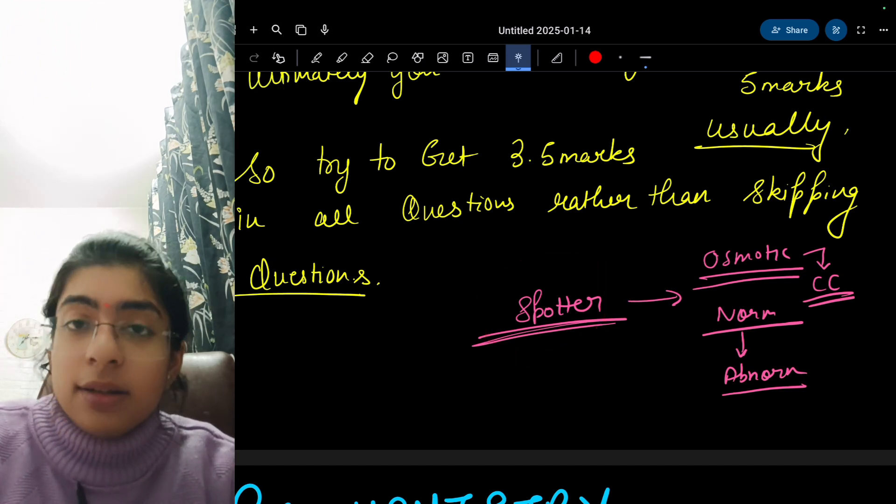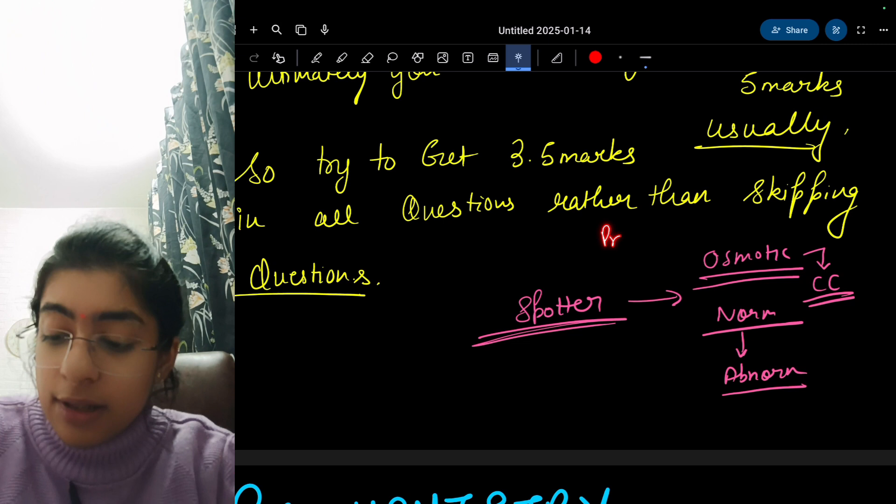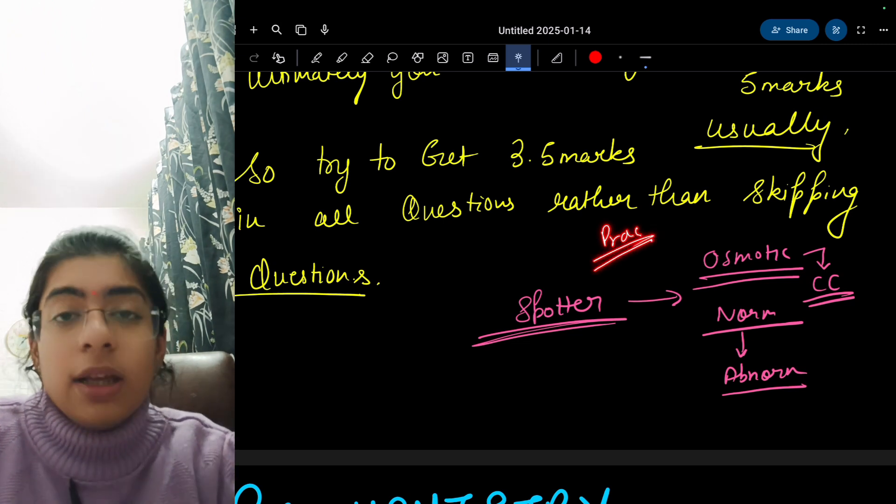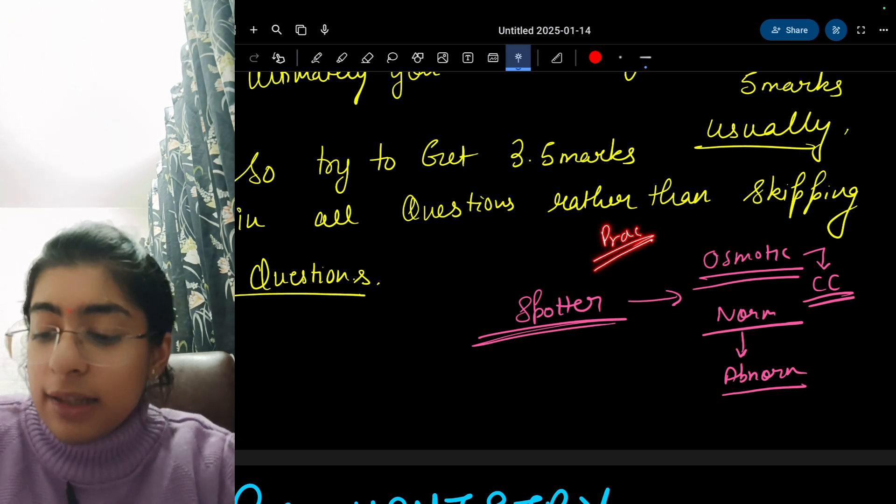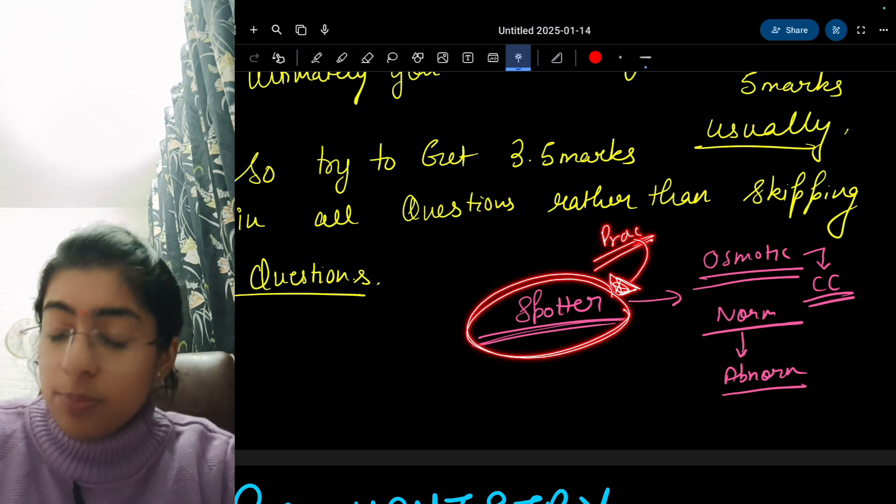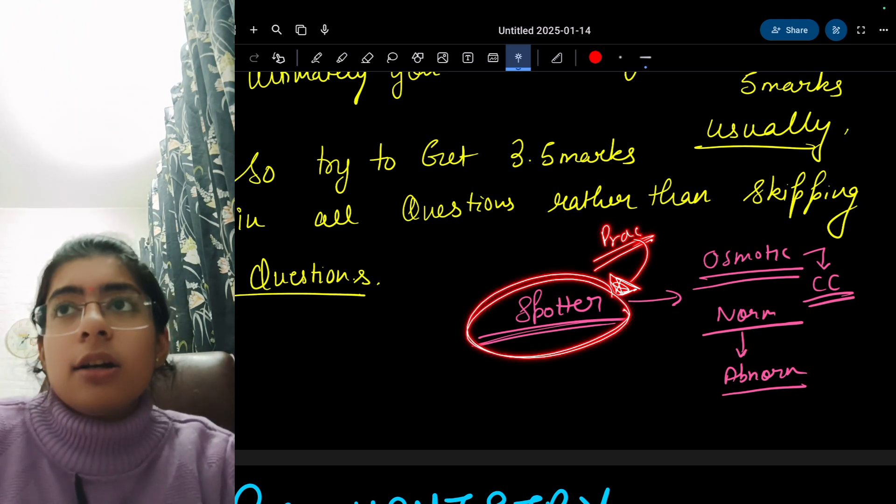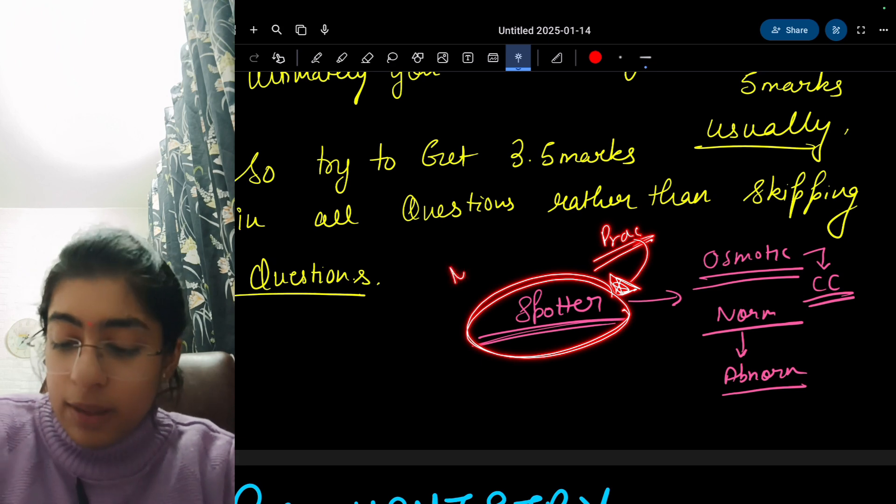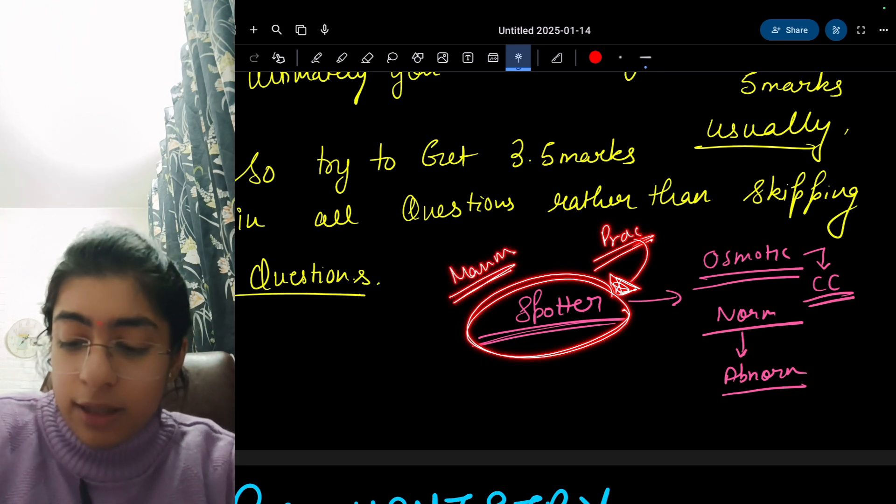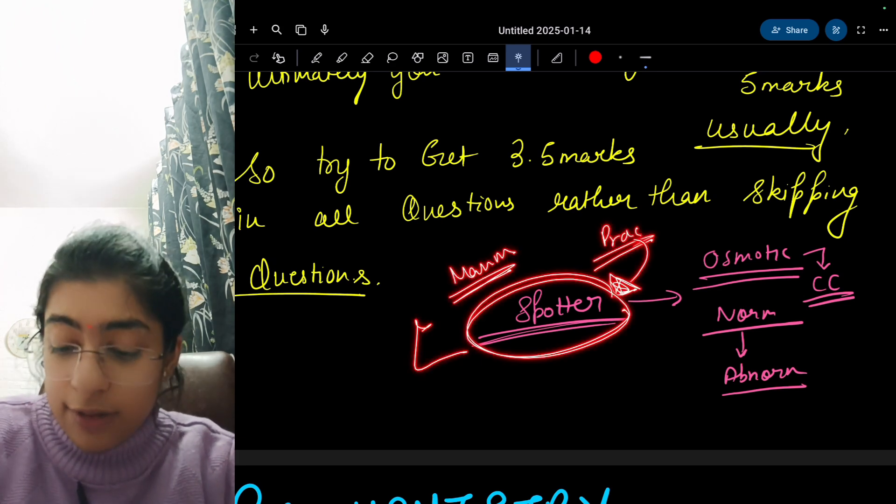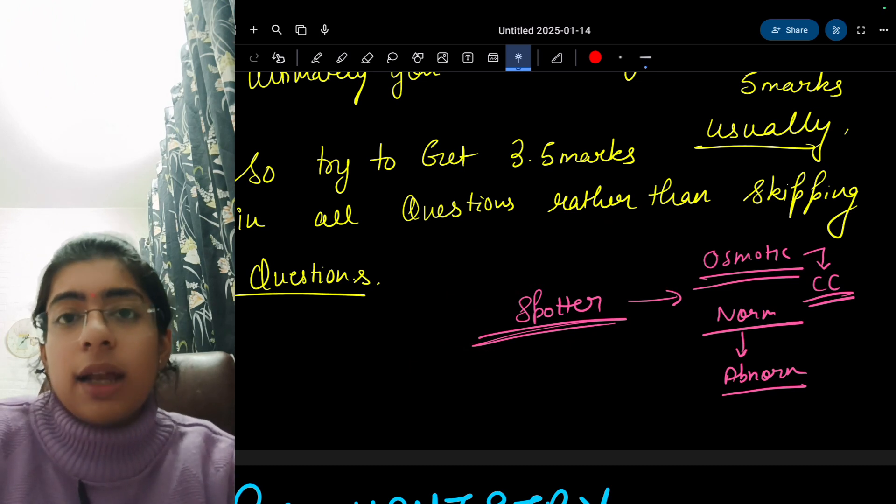In spotters, you get basically some practicals which you can't perform and which are only theoretical are kept in the spotters. As a practical tip for the spotters, prepare beforehand. I hope you must have done that mammalian studies - frog heart, the graphs, the muscle, the twitch and everything, fatigue graph.